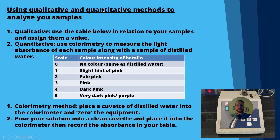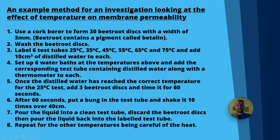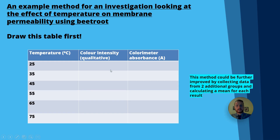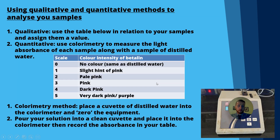Using qualitative and quantitative methods to analyze your samples: qualitative is subjective and based on a color change. We used a scale where zero was no color (same as distilled water), one was a slight hint of pink, two was pale pink, three was pink, four was dark pink, and five was very dark pink. We assigned a value from zero to five — 25 degrees was zero or one, 75 degrees ended up being a five.